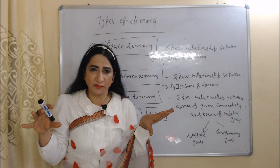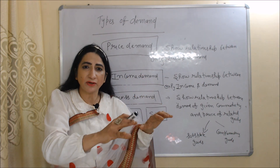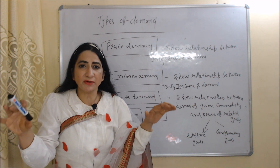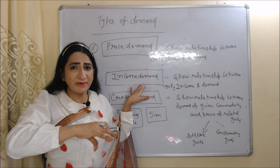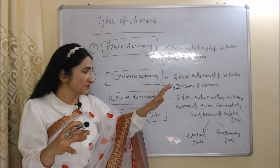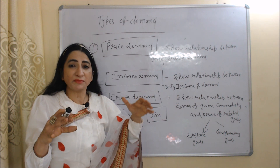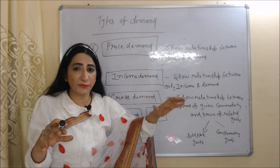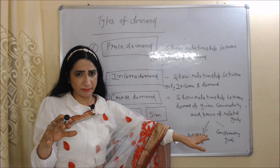Now we will see types of demand. The first type is price demand, which shows the relationship between only price and demand. Income demand shows the relationship between only income and demand. Next is cross demand, which shows the relationship between demand of a given commodity and price of related goods. Price of related goods includes price of substitute goods and price of complementary goods.